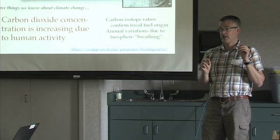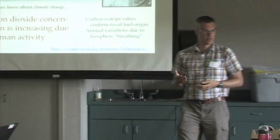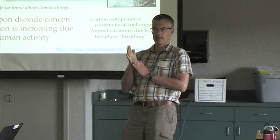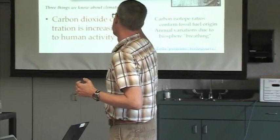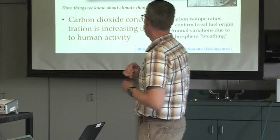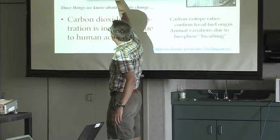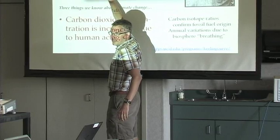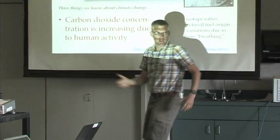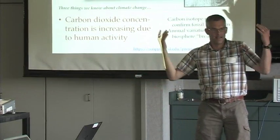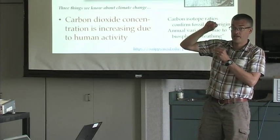This is Charles Keeling, and when he started taking this data, he had about three years' worth of records. These annual variations that we see is the breathing of the biosphere. During wintertime, as all this plant matter is decaying, it's releasing carbon dioxide into the atmosphere, so CO₂ levels increase. Then during the northern hemisphere spring and summer, as plants start growing and taking carbon dioxide out of the atmosphere, CO₂ decreases.